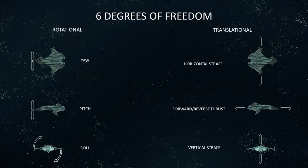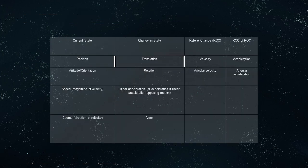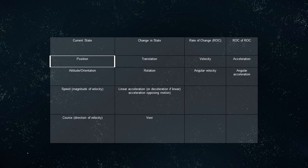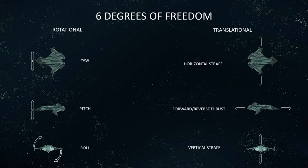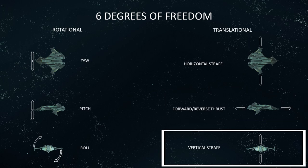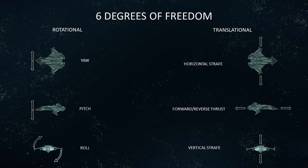Star Citizen's flight model is often described as six degrees of freedom — but what does this mean? The six degrees of freedom of motion are divided into two categories: translational and rotational. The translational degrees of freedom describe the ability of a ship to change its position. The three translational degrees of freedom are forward and back, left and right, and up and down. The ship controls corresponding to these are forward and reverse thrust, up and down or vertical strafe, and left and right or horizontal strafe respectively. Throttle as a means of describing forward and reverse thrust is a misnomer — why will be explained in the intelligent flight control system lesson.